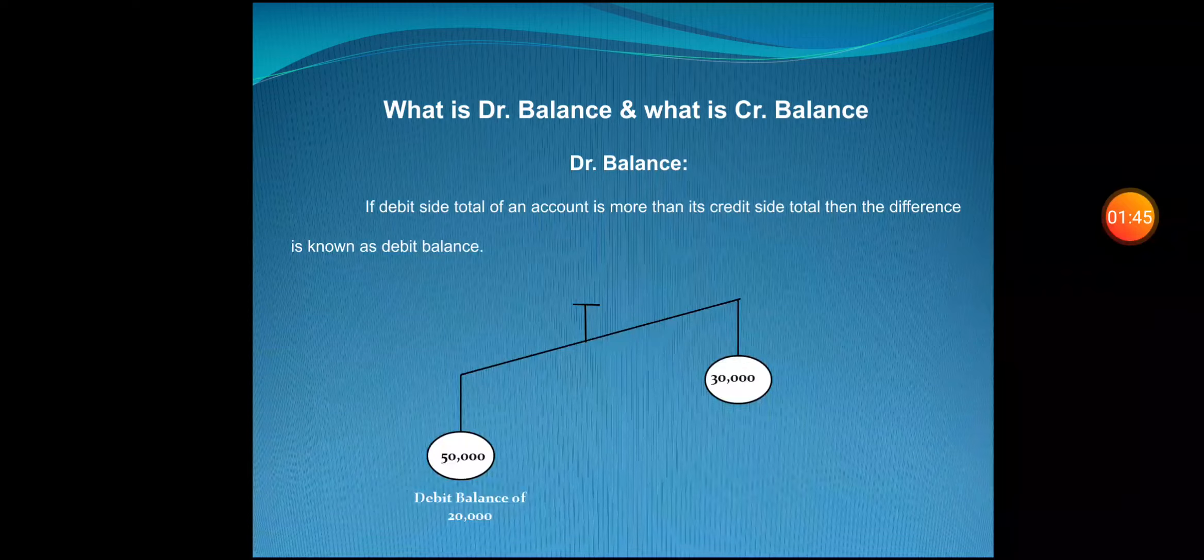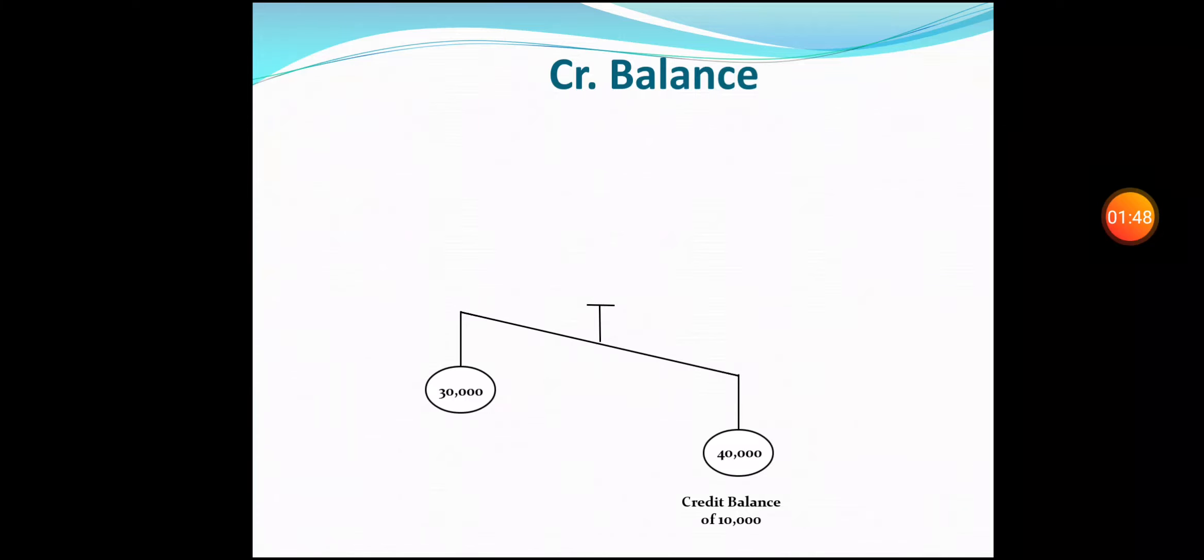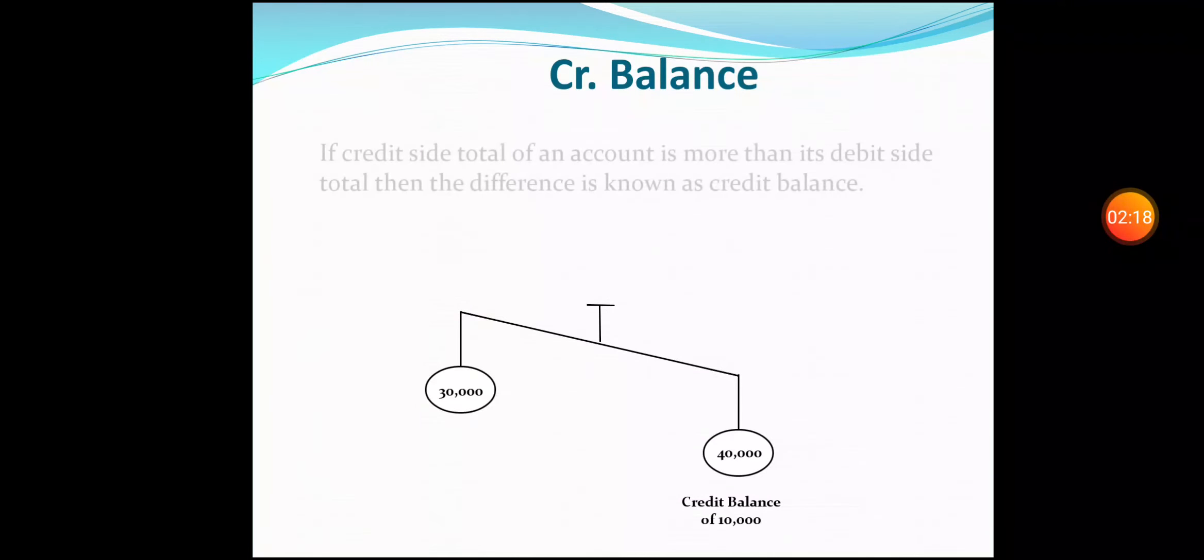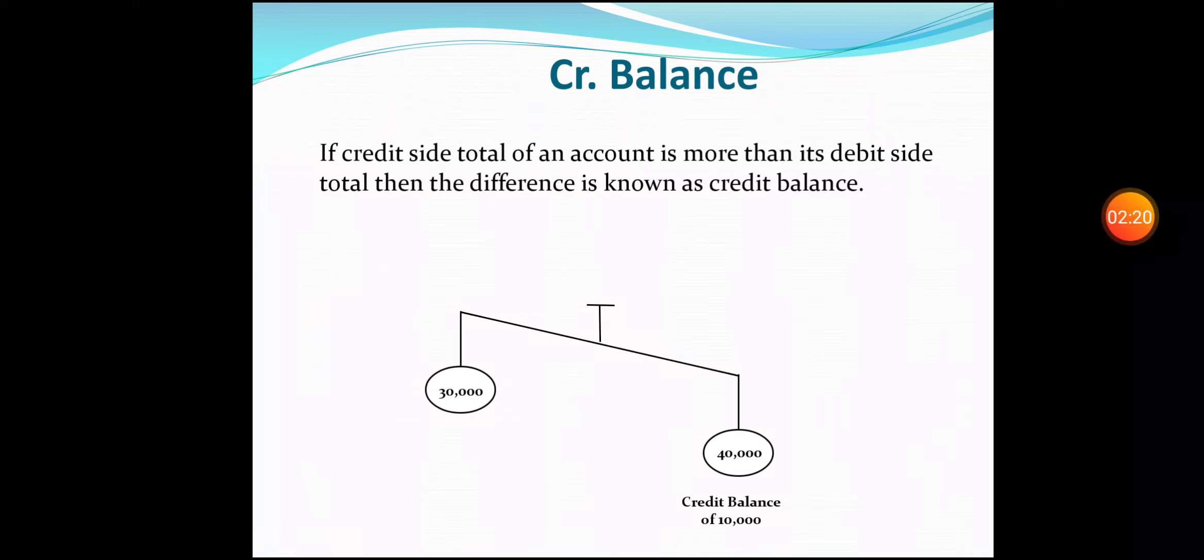Now see what is credit balance. Now you can see another figure, and in this figure of balance on the left-hand side we have written 30,000. On the right-hand side we have written 40,000. Here the credit side total is more than its debit side total by rupees 10,000. It means there is a credit balance.